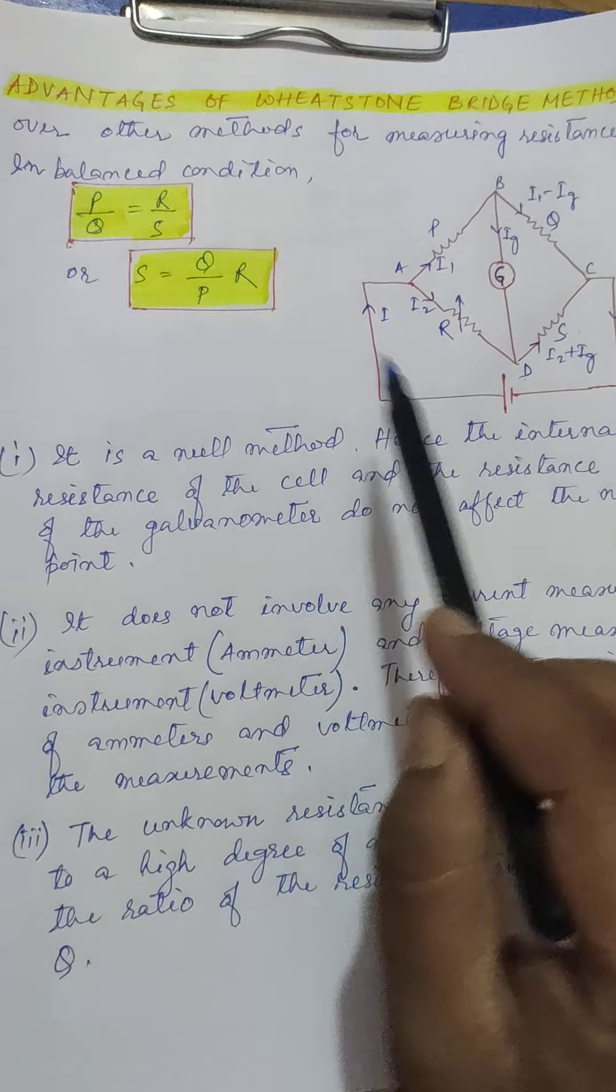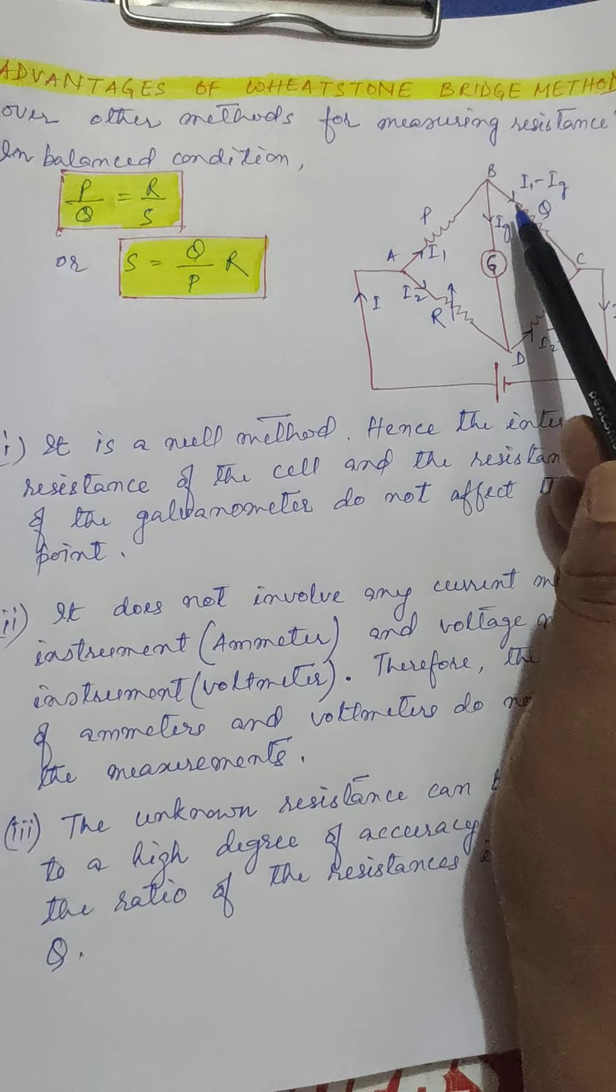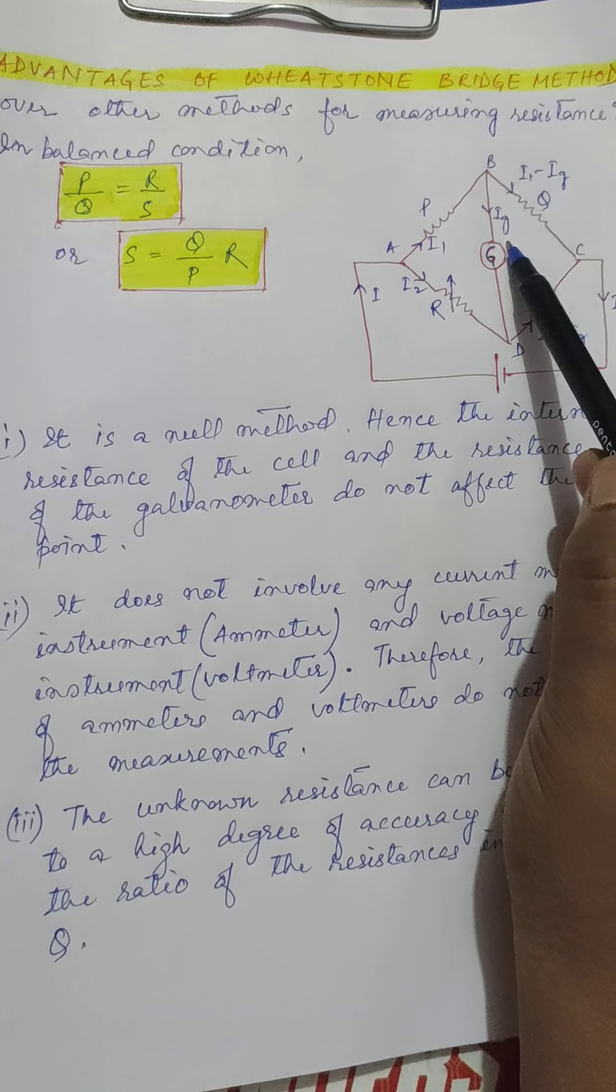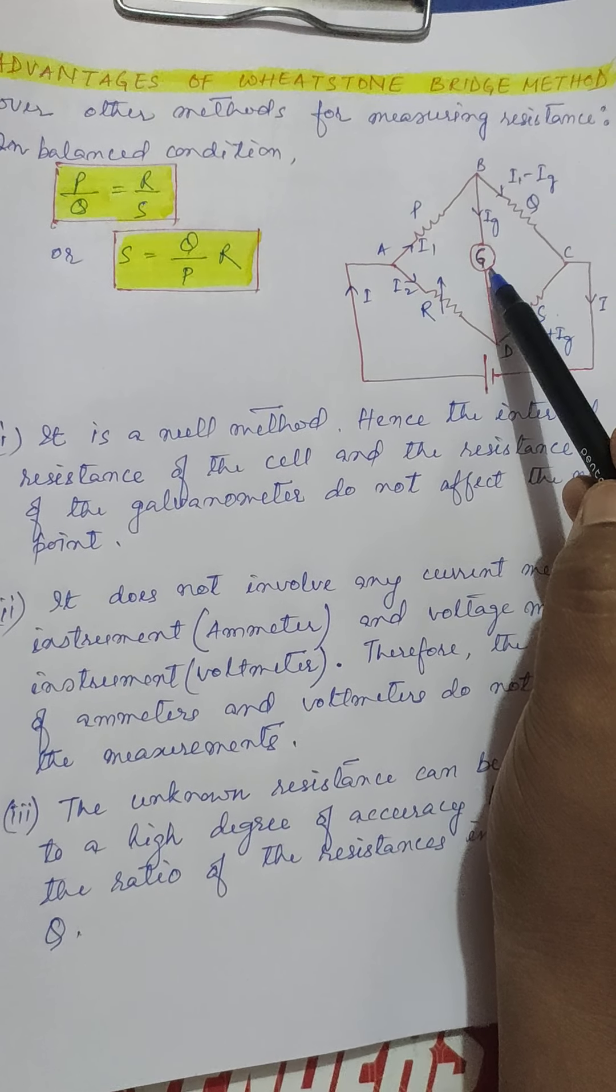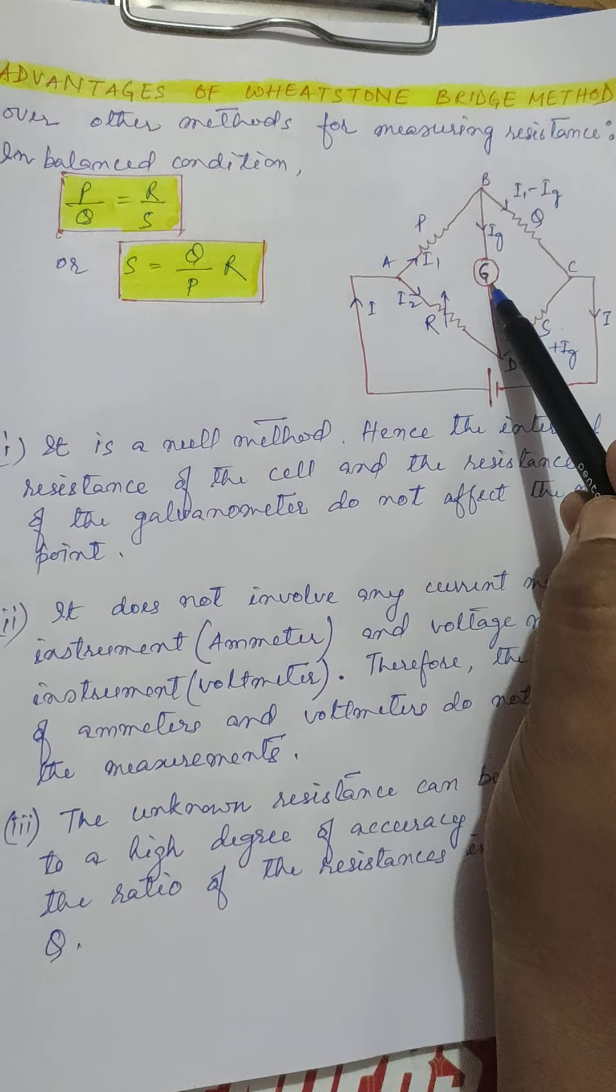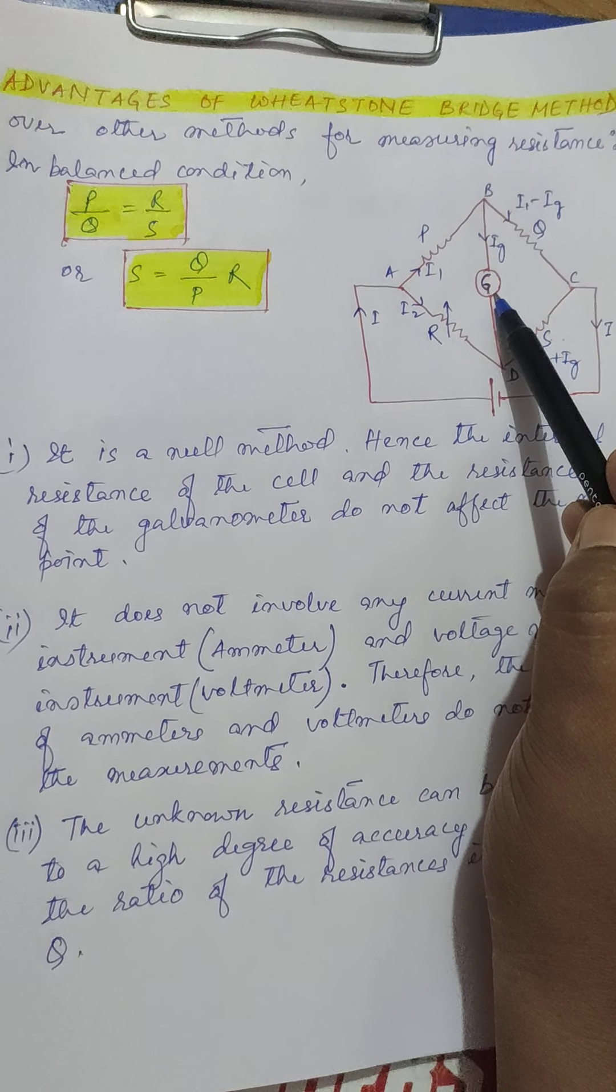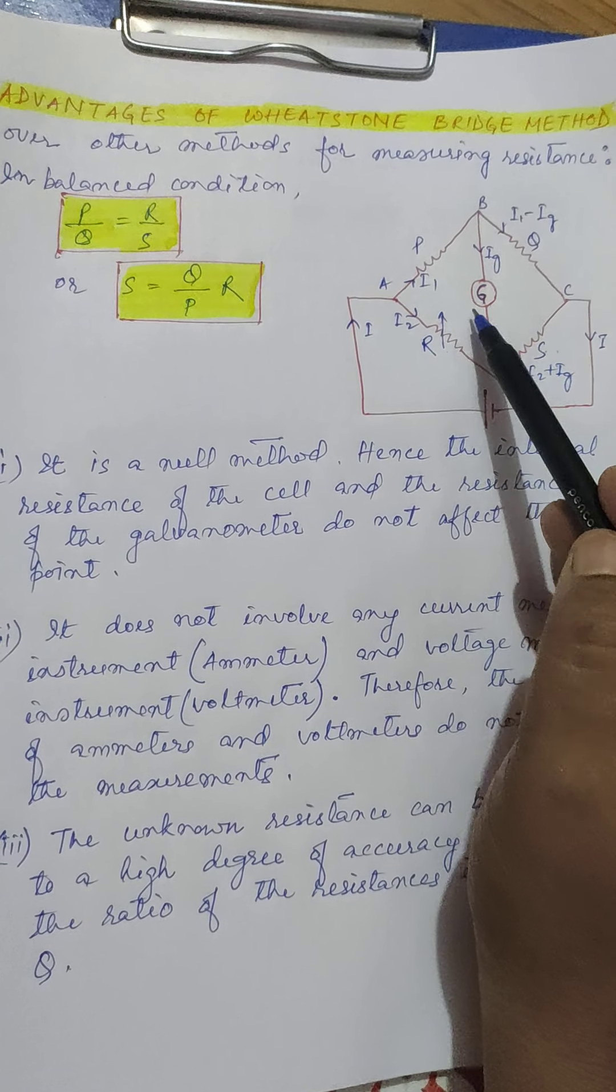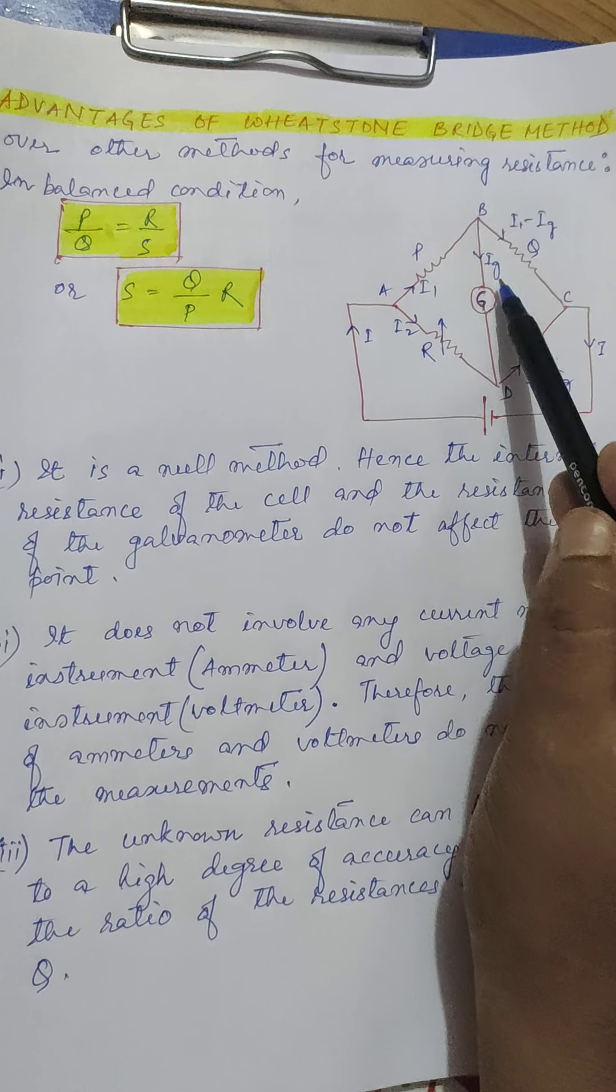Null method means when we take the balance condition, the galvanometer shows zero deflection. That is no current flows through it. Null deflection means zero deflection method. So it is called a null method where the current through the galvanometer is zero.